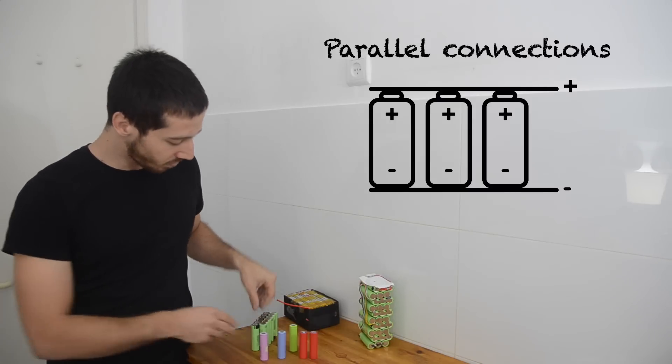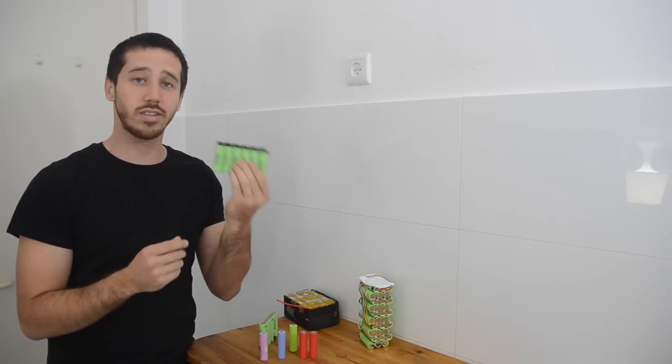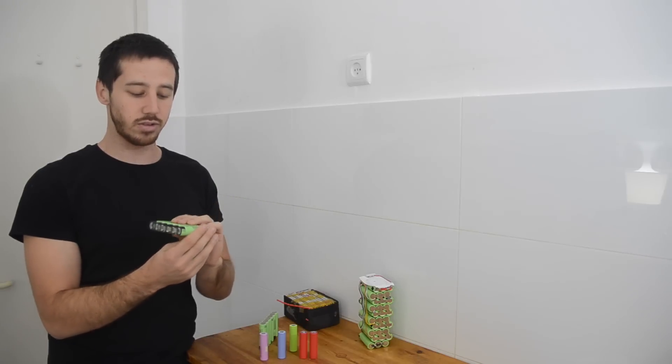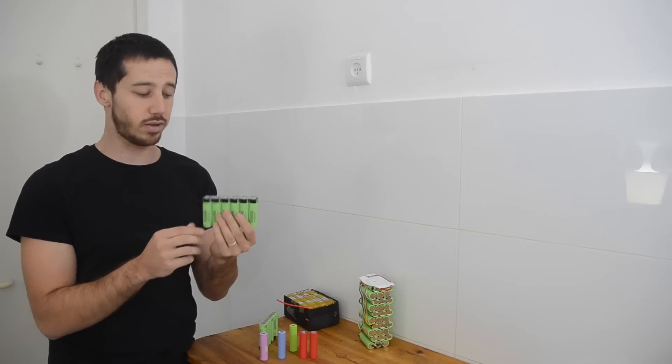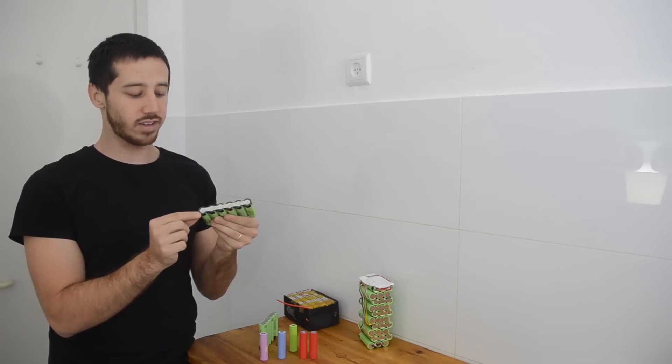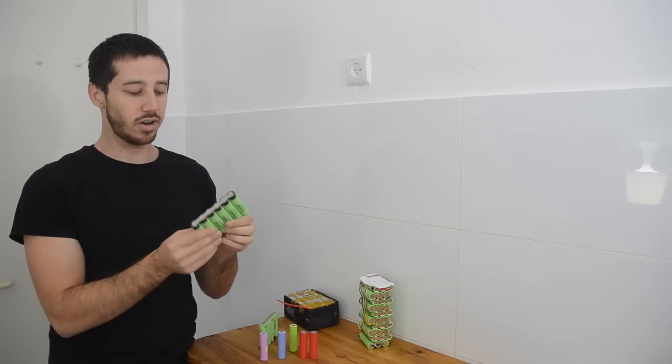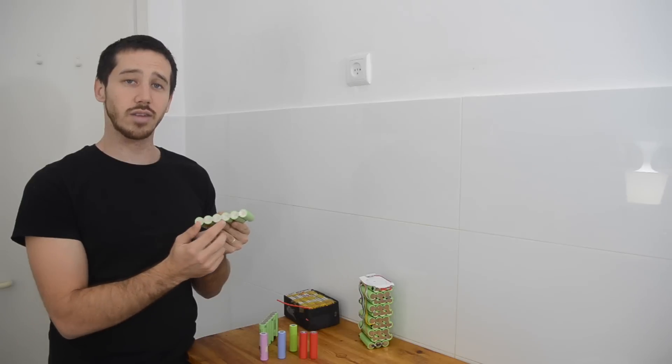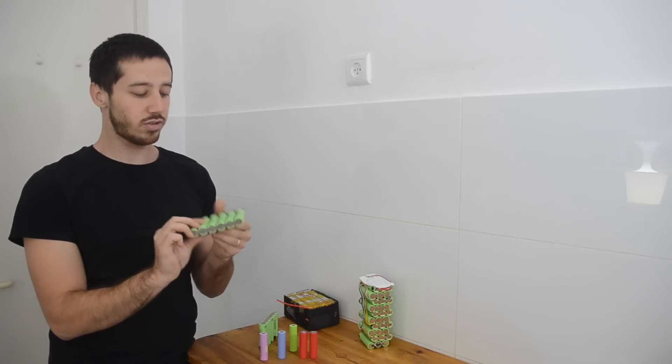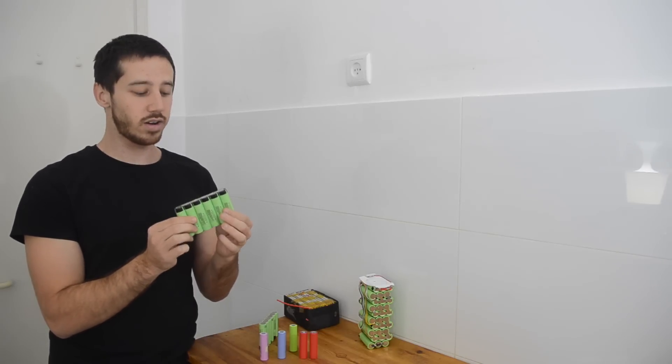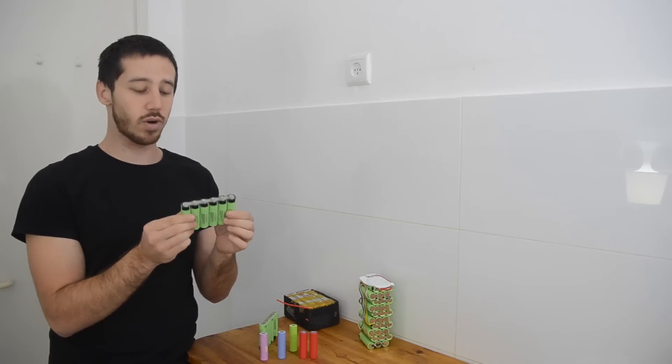So I'll show you an example. Here I've got six battery cells. These are Panasonic 18650B cells and all of the positive terminals are connected together by this piece of nickel strip and on the other side all of the negative terminals are connected together.